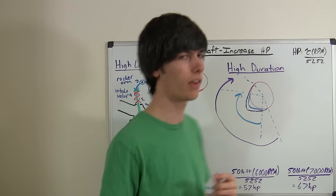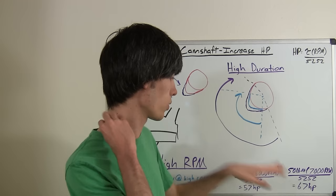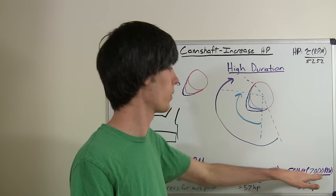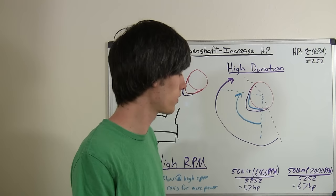Now if you take the same car, and you say the torque remains constant the whole way up because of these fantastic camshafts, then it revs to 7,000 RPM, well, 50 times 7,000 divided by 5252, 67 horsepower. So you've increased your horsepower by 10.